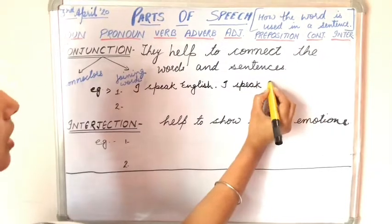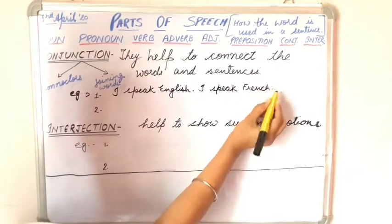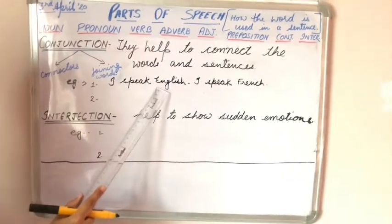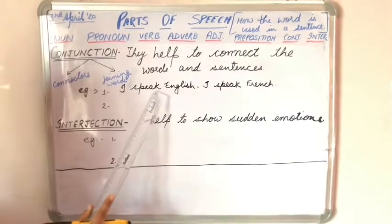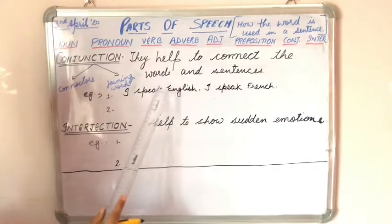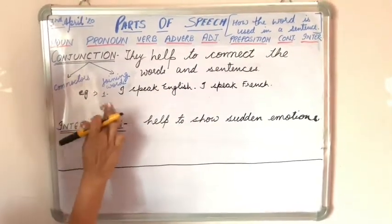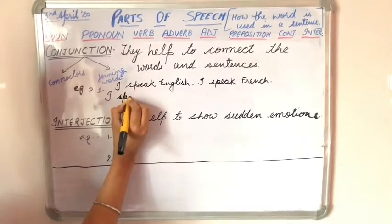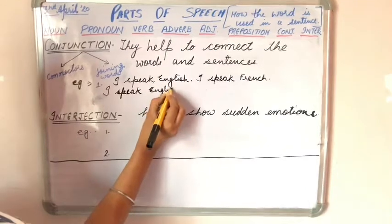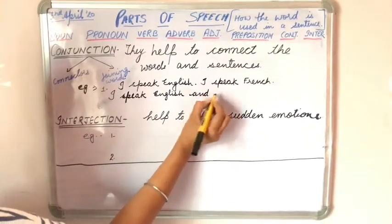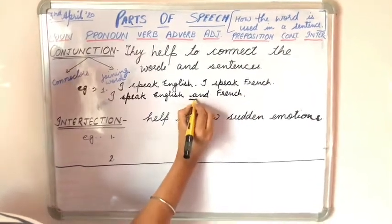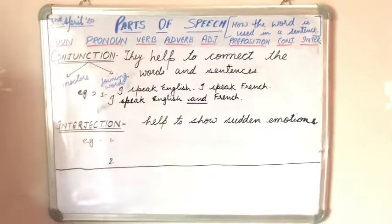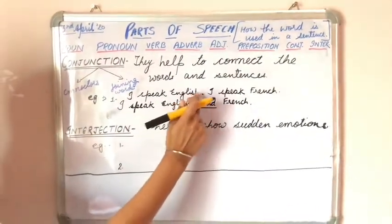I speak English. I speak French. Children, you can see I have written here two sentences. The first one is 'I speak English' and the other one is 'I speak French.' Now we have to make them one. The sentence would be, with the help of a conjunction: 'I speak English and French.' You can see I have used the word 'and' as a conjunction, and it is connecting these two sentences to make them one.